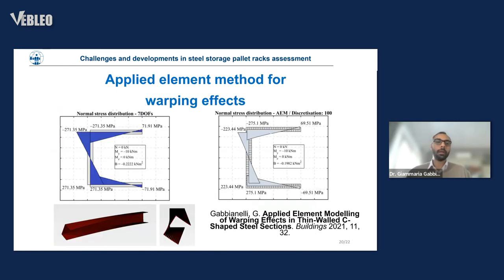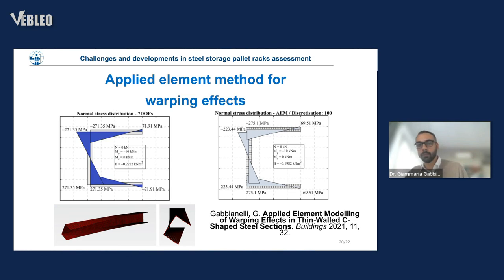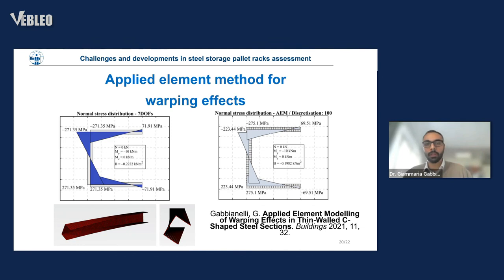Finally, I wanted to check the accuracy of the Applied Element Method with the warping effect. I took different sections and elements and performed numerical analyses with the Applied Element Method. What I found is that if you discretize the element well, you can achieve very good agreement between the 7DOF formulation and the Applied Element Method. This means the Applied Element Method can be a unique tool that accurately replicates all analyses — static, seismic, collapse, and post-collapse scenarios.